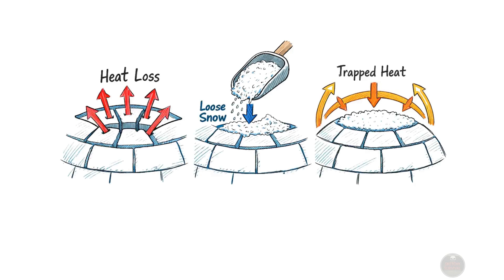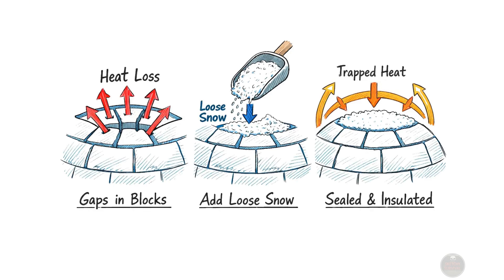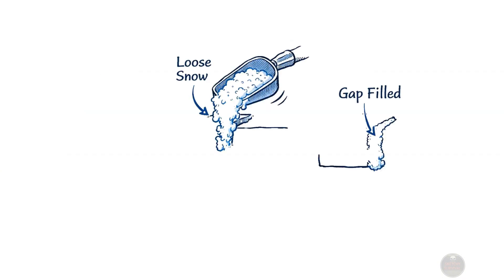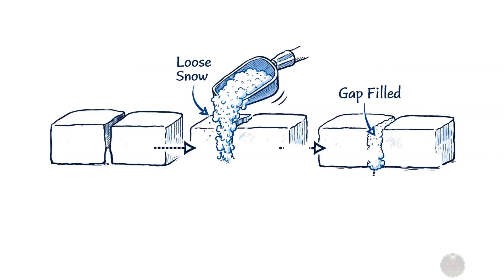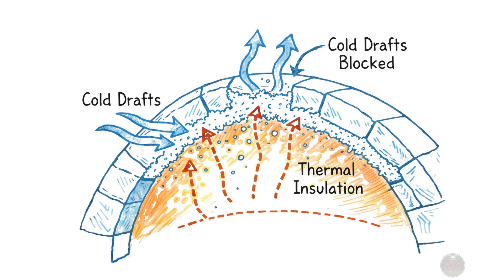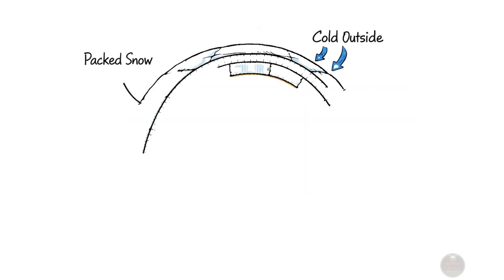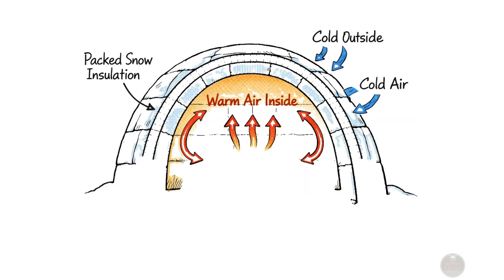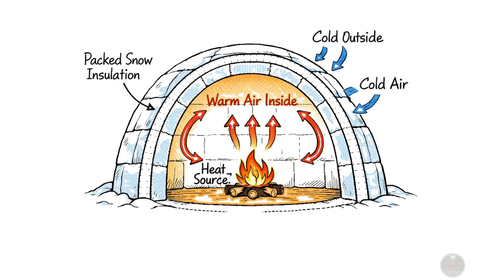Once this capstone is secured, the next vital step involves chinking, a crucial process for insulation. This means meticulously filling any tiny gaps or cracks between the snow blocks with loose, powdery snow. This essential process stops cold drafts from entering the interior, significantly improving the thermal insulation of the shelter and making it much warmer and more comfortable for its occupants.